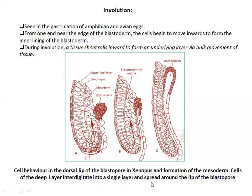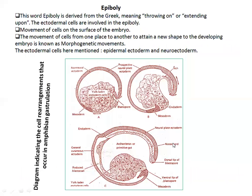Surface area movements involve the movement of cells on the surface of the embryo, giving a new shape to the developing embryo.